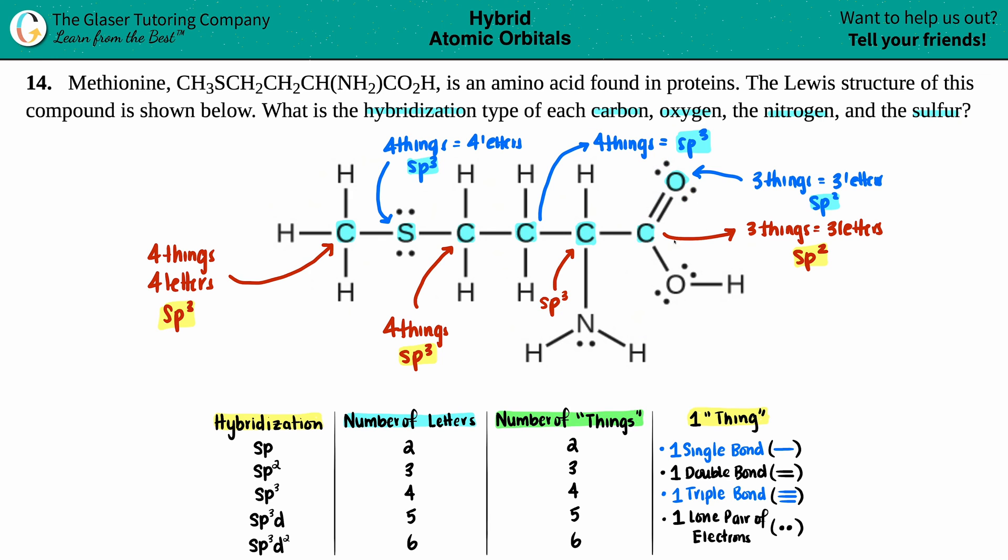Let's erase. Let's go to the next oxygen. What does this oxygen have? One single bond, that's one thing. Another single bond, that's two things. One lone pair, that's three things. The other lone pair, that's four things. Four things, four letters. We're back to SP3.